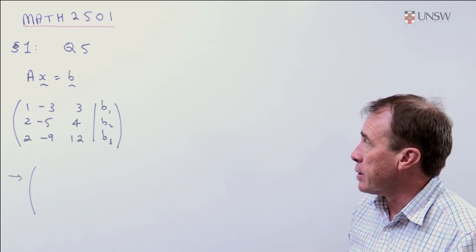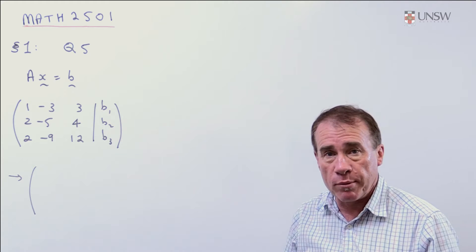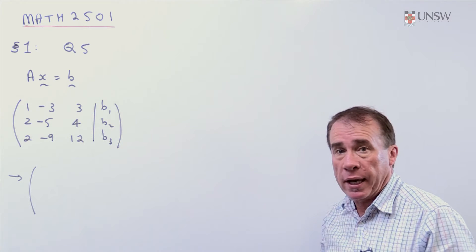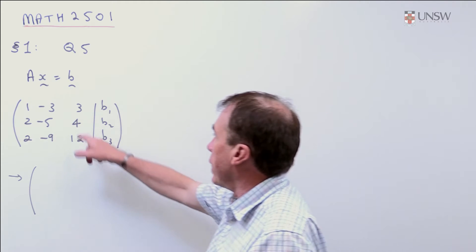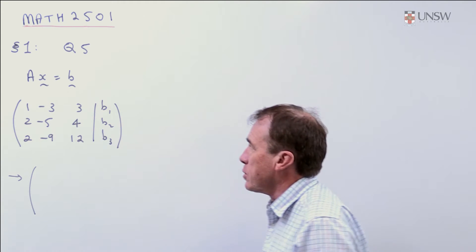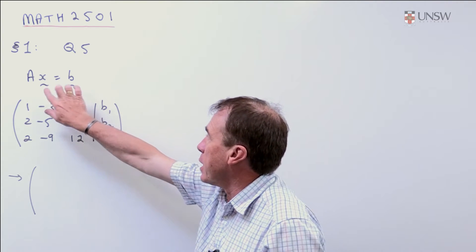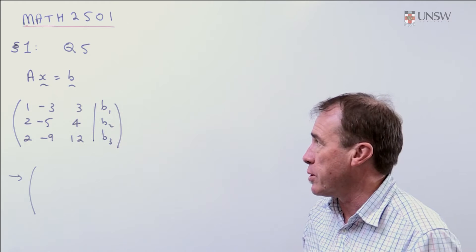So, the first one is a very simple problem, very similar to what you've done back in first-year maths. You're given a matrix A and you have an arbitrary vector B and you're asked the question what conditions there are on this vector B, so that Ax equals B has at least one solution.